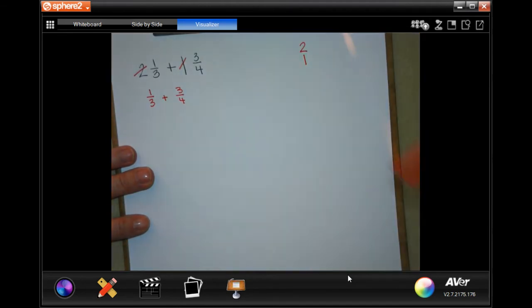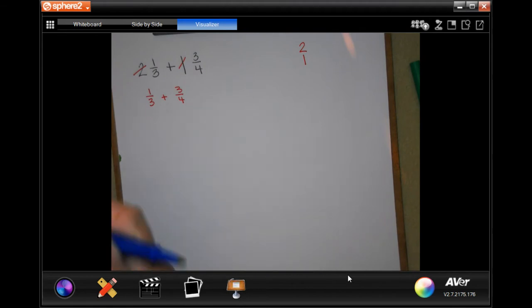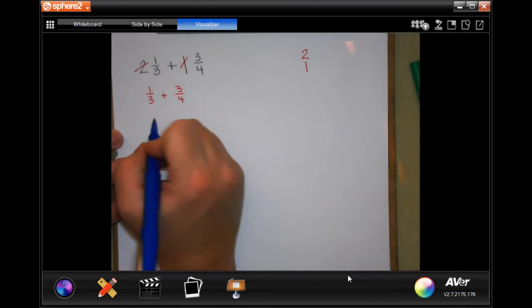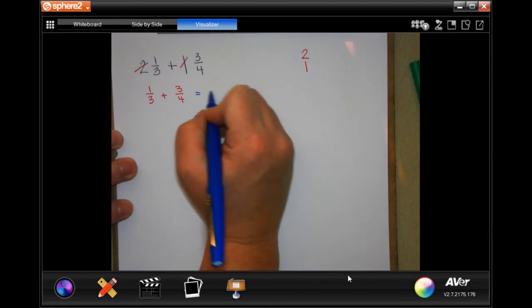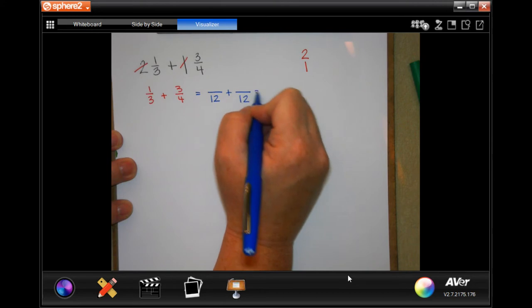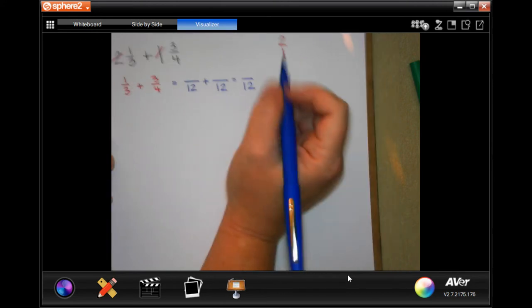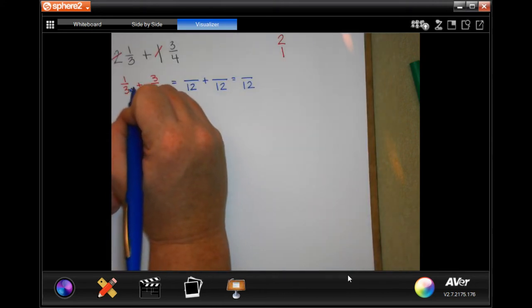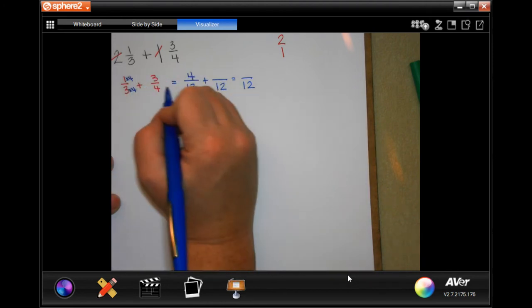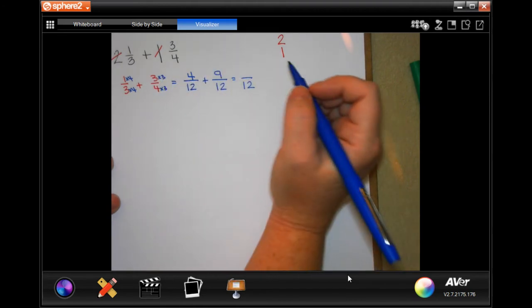Now I have to find a common denominator. We know from previous lessons that 3 and 4 is going to be 12. 3, I had to multiply by 4, multiply the top by 4, I get 4. I had to multiply the bottom by 3, multiply the top by 3, I get 9.